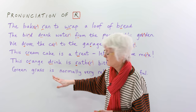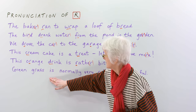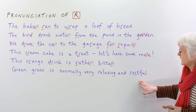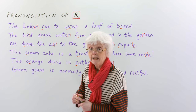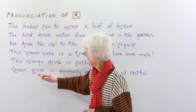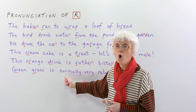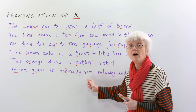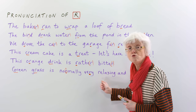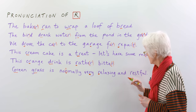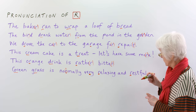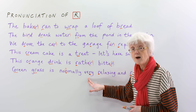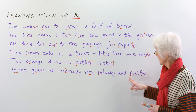And finally: green grass is normally — normally has an open OR vowel, no R — very — R is pronounced — relaxing — pronounced — and restful — pronounced. Green grass is normally very relaxing and restful.